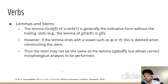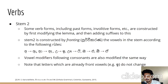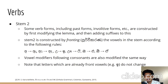For verbs, the lemma is generally the indicative form without the trailing number. However, if the lemma ends with a vowel such as 'e' or 'a', it is deleted when constructing the stem, so the stem may differ from the lemma. We constructed Stem 2 because some verb forms including past forms and infinitive forms are constructed by first modifying the lemma before adding suffixes. Stem 2 is constructed by fronting the vowel in the stem: A→A, U→E, and so on, with vowel modifiers following consonants modified the same way, unless the vowel is already a front vowel.